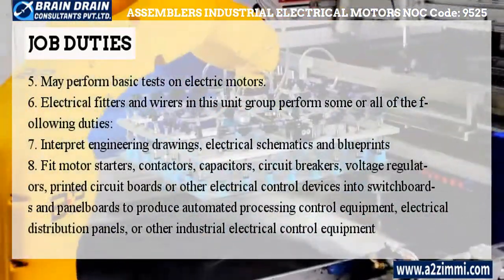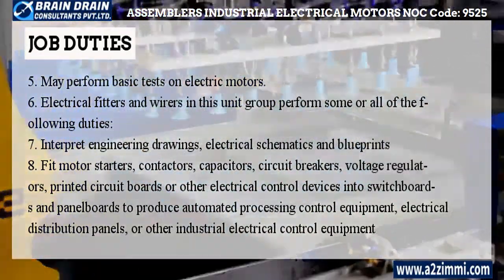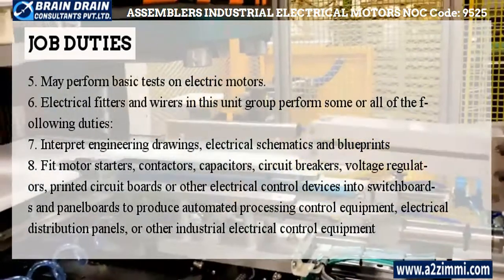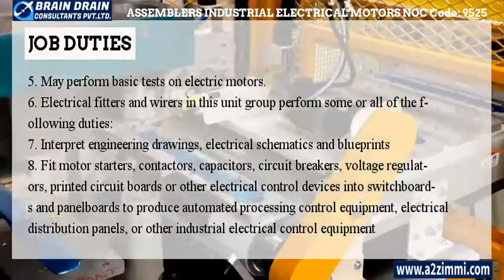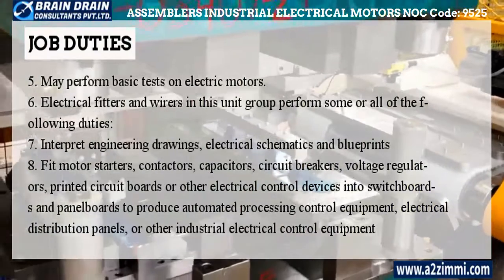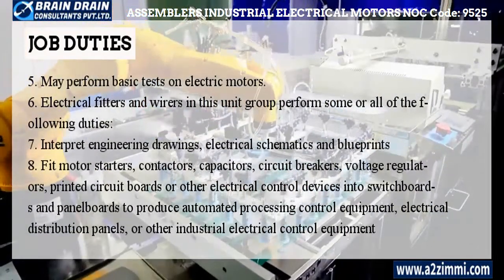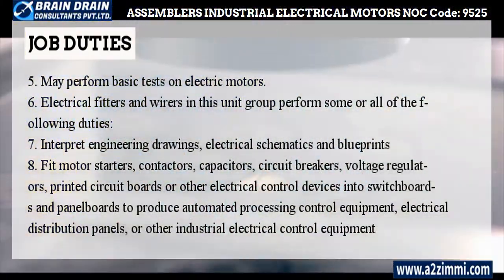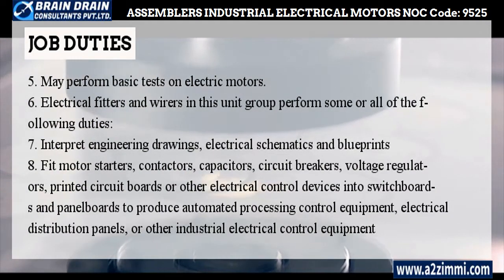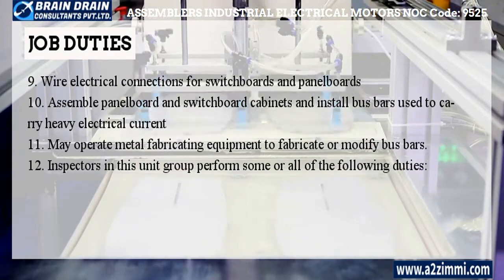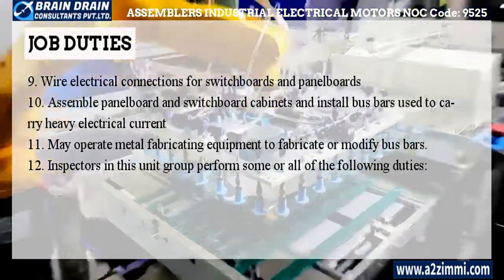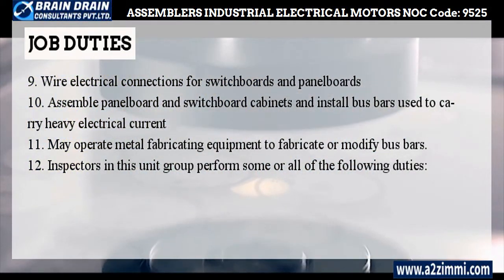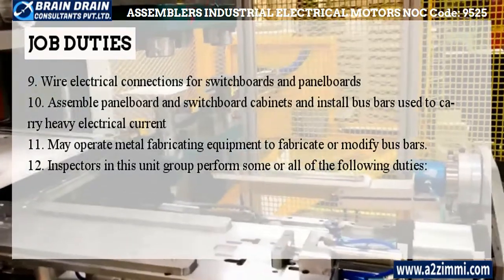Electrical fitters and wirers in this unit group perform some or all of the following duties. Interpret engineering drawings, electrical schematics, and blueprints. Fit motor starters, contactors, capacitors, circuit breakers, voltage regulators, printed circuit boards, or other electrical control devices into switchboards and panel boards to produce automated processing control equipment, electrical distribution panels, or other industrial electrical control equipment. Wire electrical connections for switchboards and panel boards. Assemble panel board and switchboard cabinets, and install bus bars used to carry heavy electrical current. May operate metal fabricating equipment to fabricate or modify bus bars.